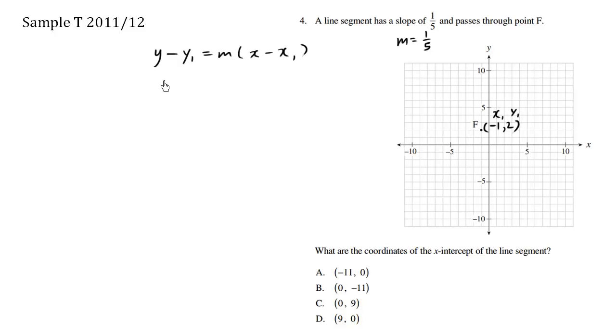So here we have y minus y₁ is 2 equals M, the slope here is one-fifth, times x minus, this is negative 1. So the minus and the negative become a positive. So we have this line equation representing a slope of one-fifth and it would be passing through something like this.